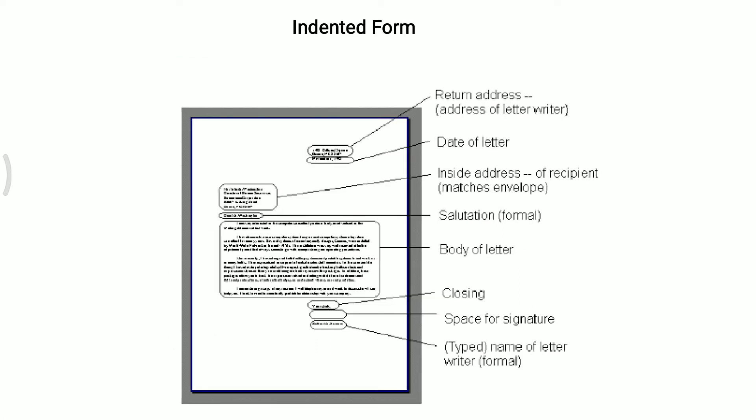Second is indented form. The indented form is the most old-fashioned form and is hardly used today. This form has the inside address in indented style and the beginning of each paragraph is indented five spaces from the margin. The indentation causes the letter to have an uneven appearance at the left margin and it is not very pleasing. Besides that, it takes more time to type because of the indenting.